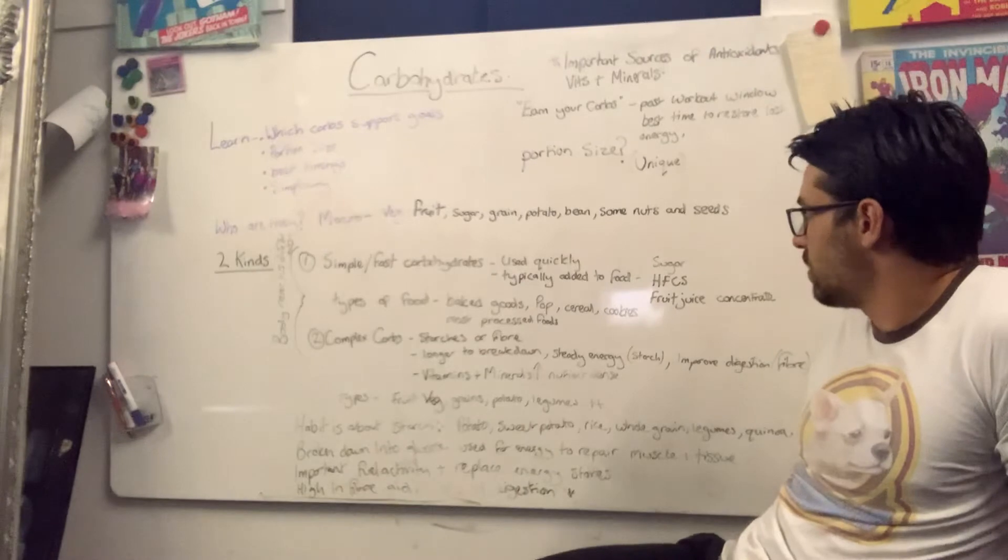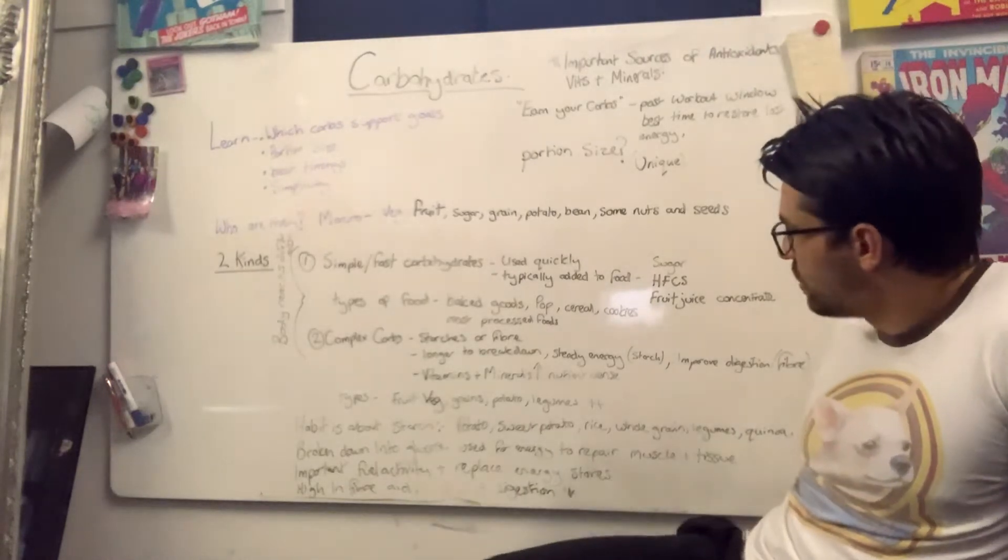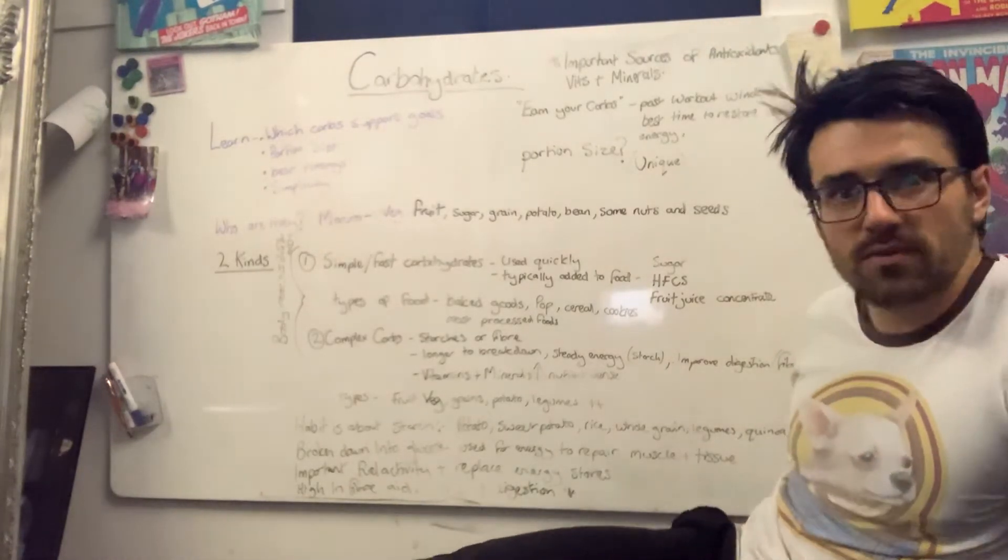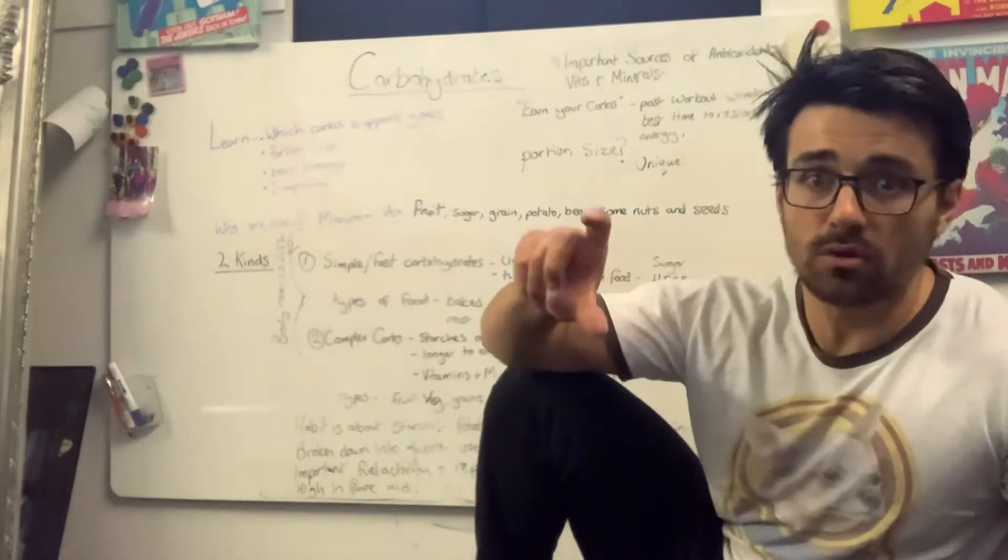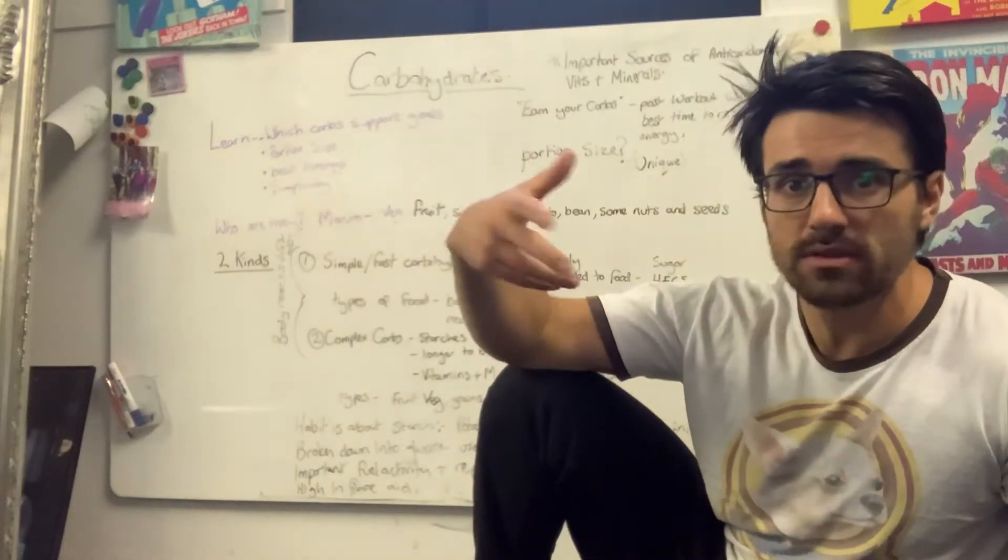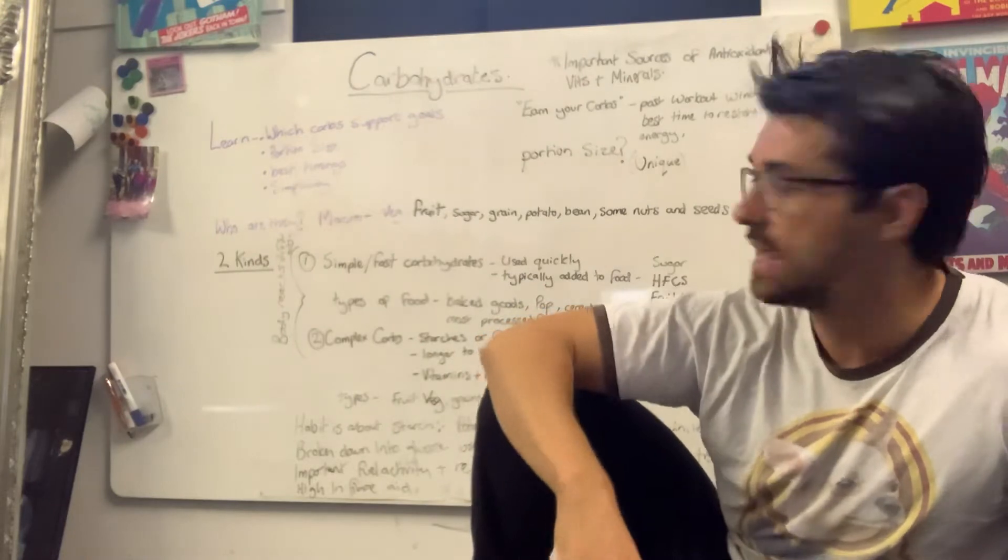The types of food that you would see with these - baked goods, pop, Coca-Colas, cereals, cookies, and most processed foods. Most foods, when you read the back, has got a quite high level of ingredients. Chances are, it's got some simple carbohydrates in it.